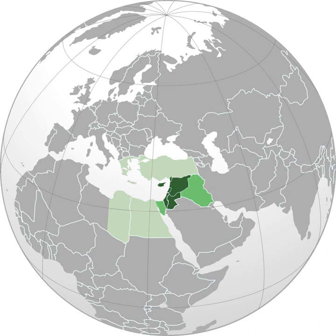The name 'Levant states' was used to refer to the French mandate over Syria and Lebanon after World War I. This is probably the reason why the term Levant has come to be used more specifically to refer to modern Syria, Lebanon, Palestine, Israel, Jordan, and Cyprus. Some scholars misunderstood the term, thinking that it derives from the name of Lebanon.